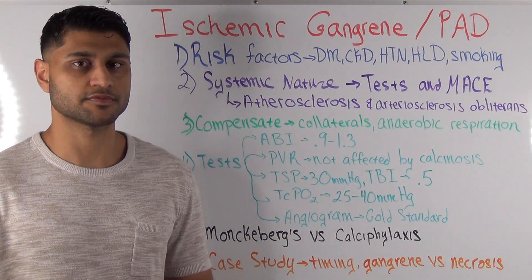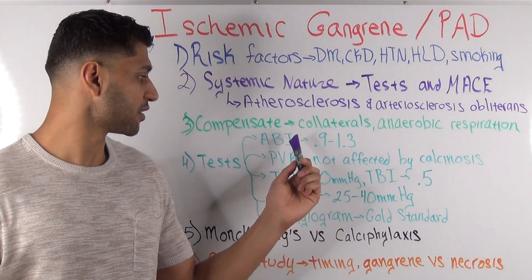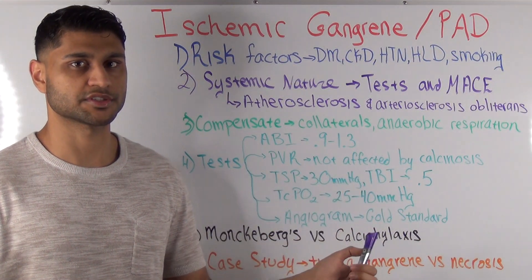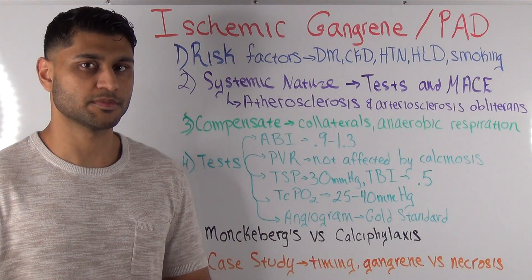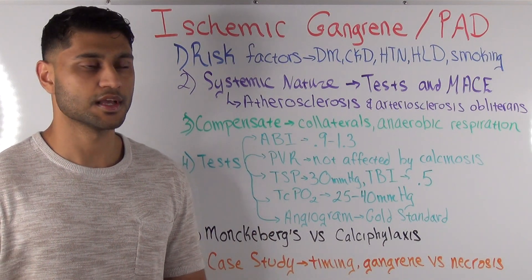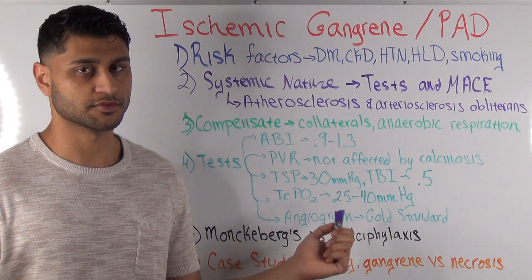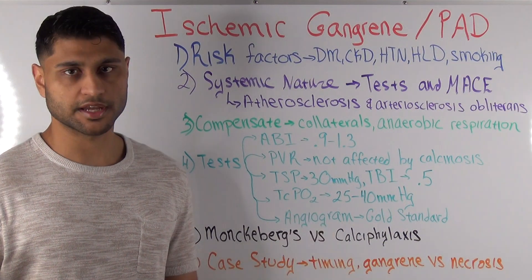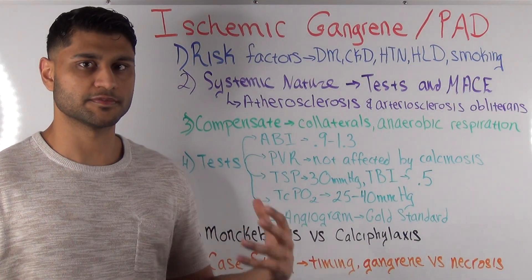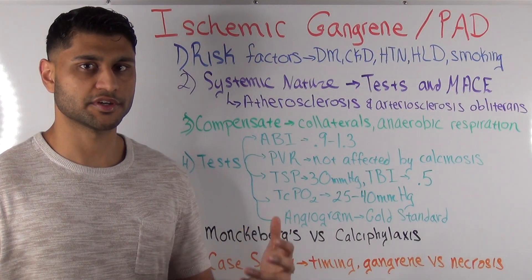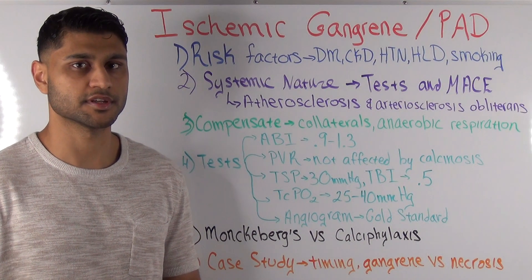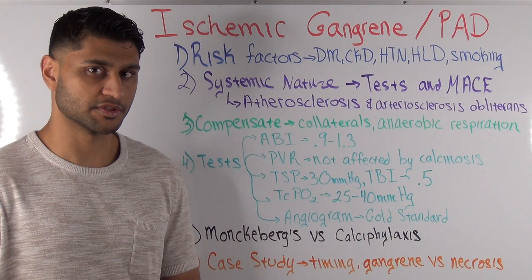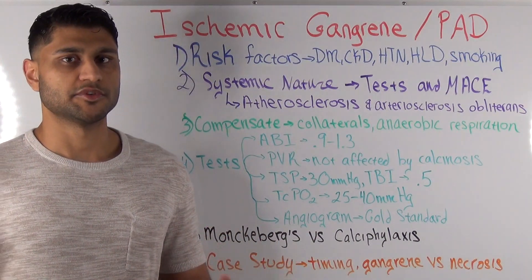Vascular surgeons typically rely on the ABI, PVR, and most importantly the toe brachial index and toe systolic pressure when evaluating an ischemic toe to determine if an angiogram is needed — they don't give the TC-PO2 too much credence, but it's still important to know for interviews. The gold standard is the angiogram, because it is invasive and provides a clear picture of the arteries coming down to the lower extremity. These non-invasive tests are ordered first, and if needed, the patient is taken to the OR for an angiogram.